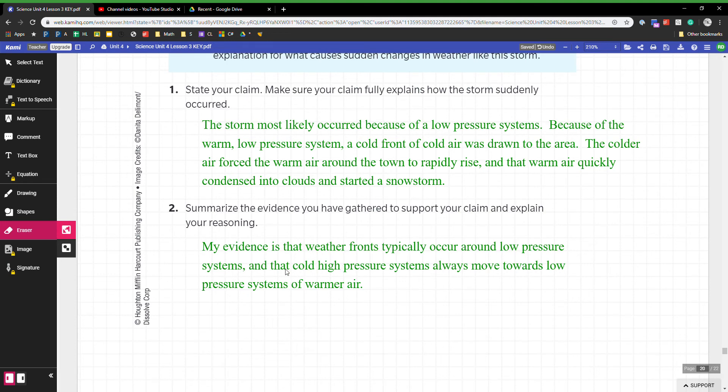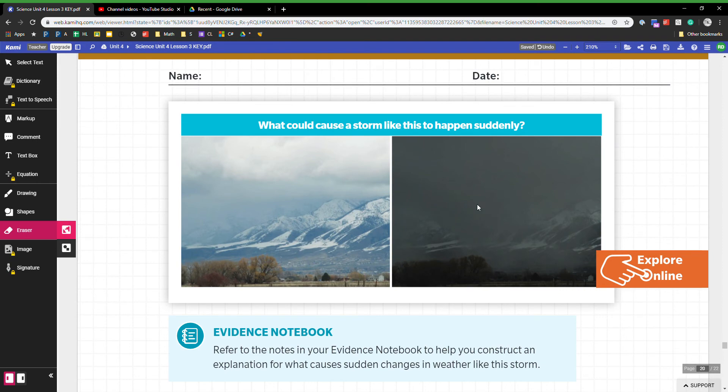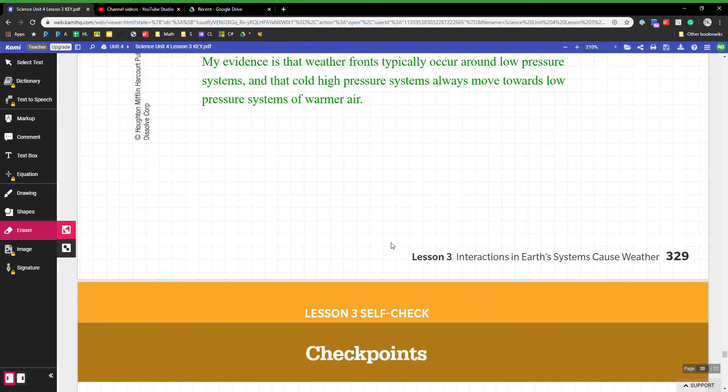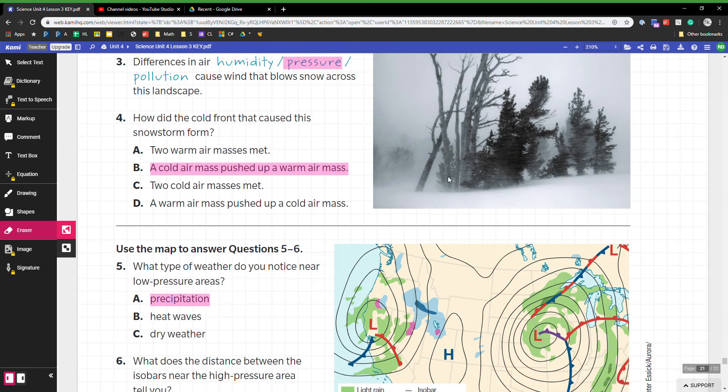My evidence was that weather fronts typically occur on low pressure systems. Cold high pressure systems move towards low pressure systems, and the warm air would rapidly rise. I remember at the very beginning it said that the storm moved in really quickly.